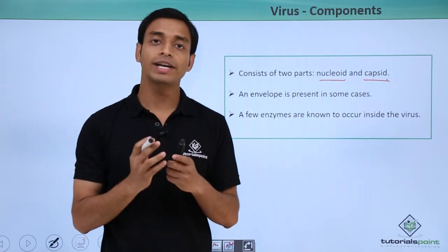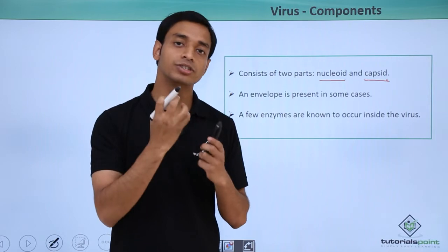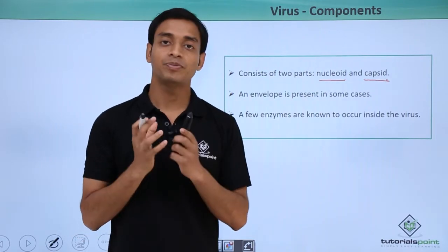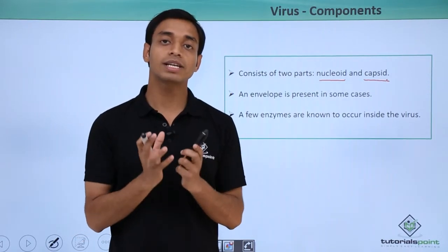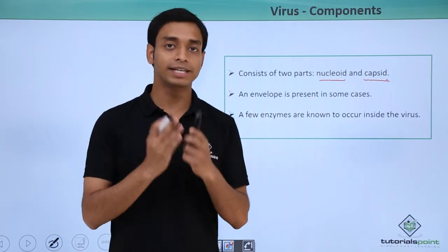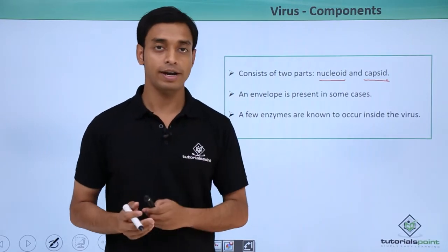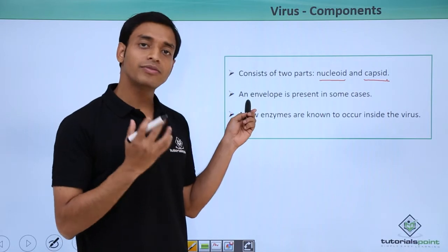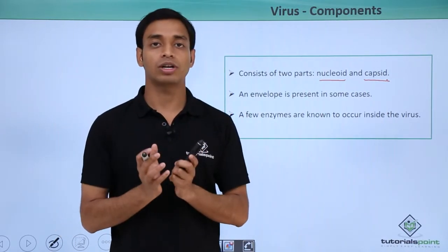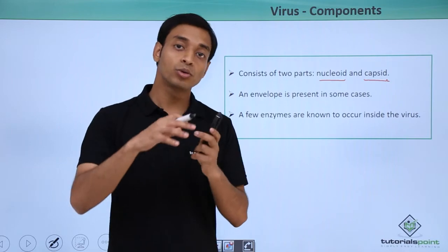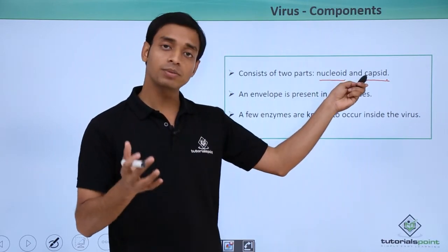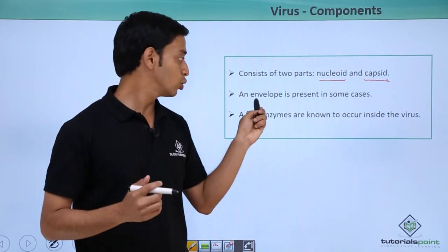The nucleoid represents the inner genetic material, whereas the capsid is the outermost covering which encloses the genetic material, which can be DNA or RNA. In some viruses there can be an additional envelope-like structure which covers the proteinaceous capsid as well.